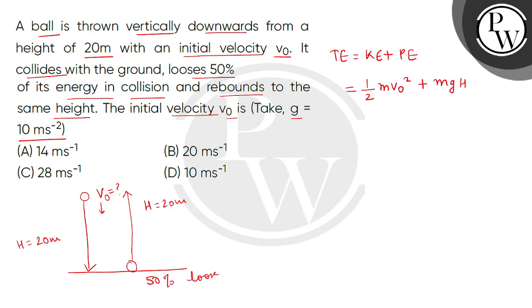Now, when it collides with the ground, it retains 50% of this energy. It means that 50% of half MV0 square plus MGH equals to the potential energy at the same height, which is MGH. So, this gives us 2MGH.